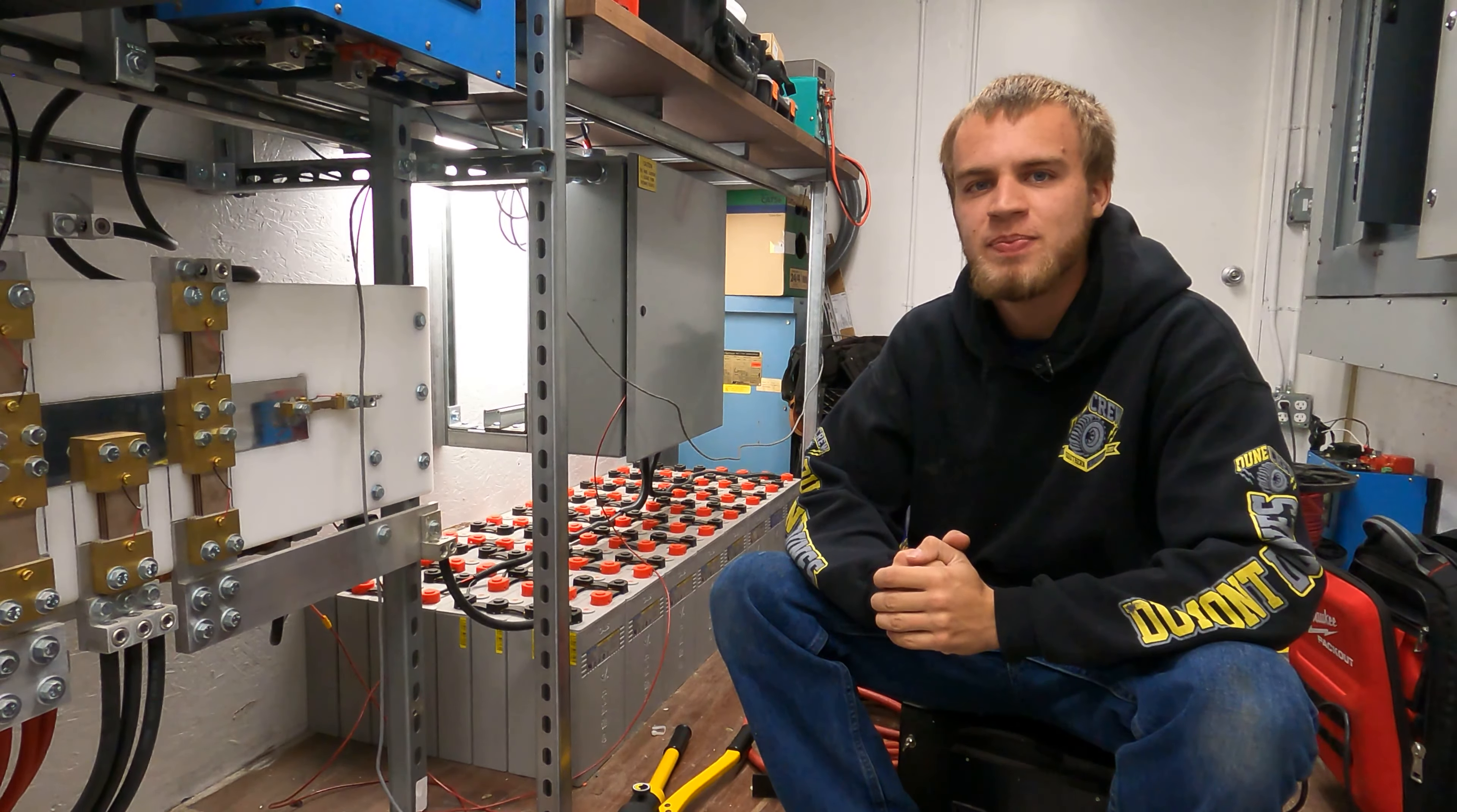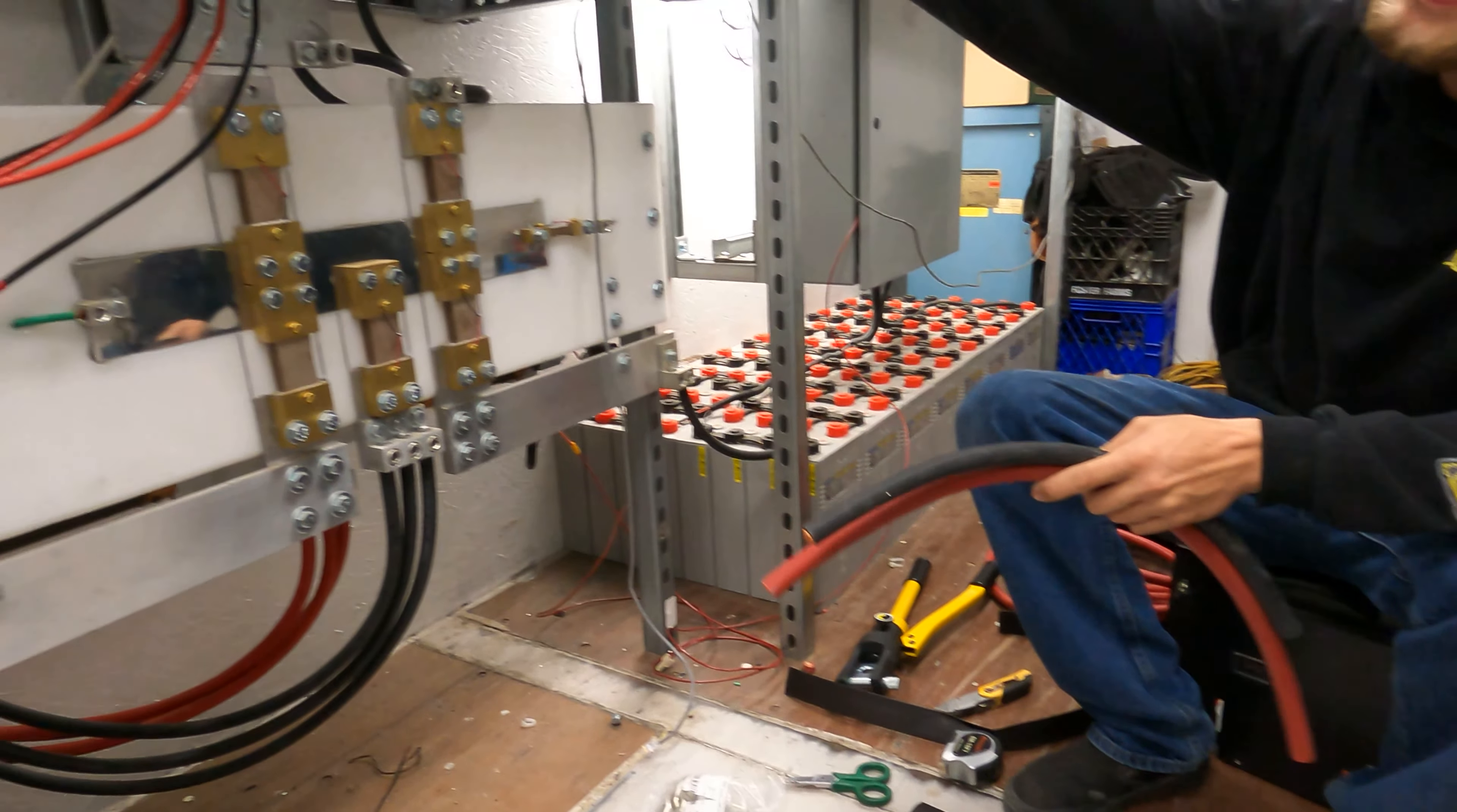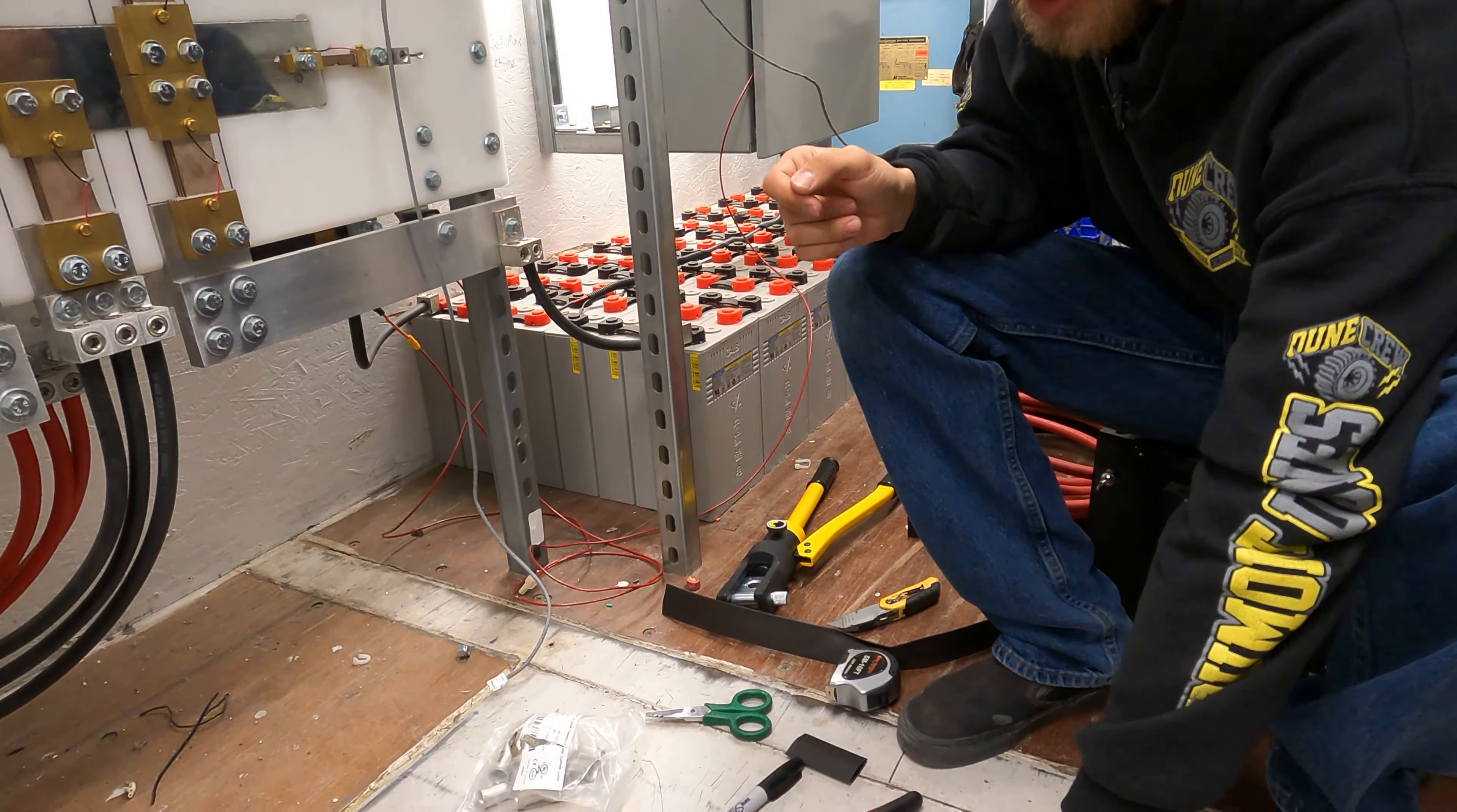Welcome back everybody, HitechLab here. In today's video we have some 4-0 battery cable, and these two pieces I've already cut to length. These are going to go up here on my Solark inverter and tie onto my bus bars. In today's video we're going to be showing you how to crimp the lugs on here. Let's get started.